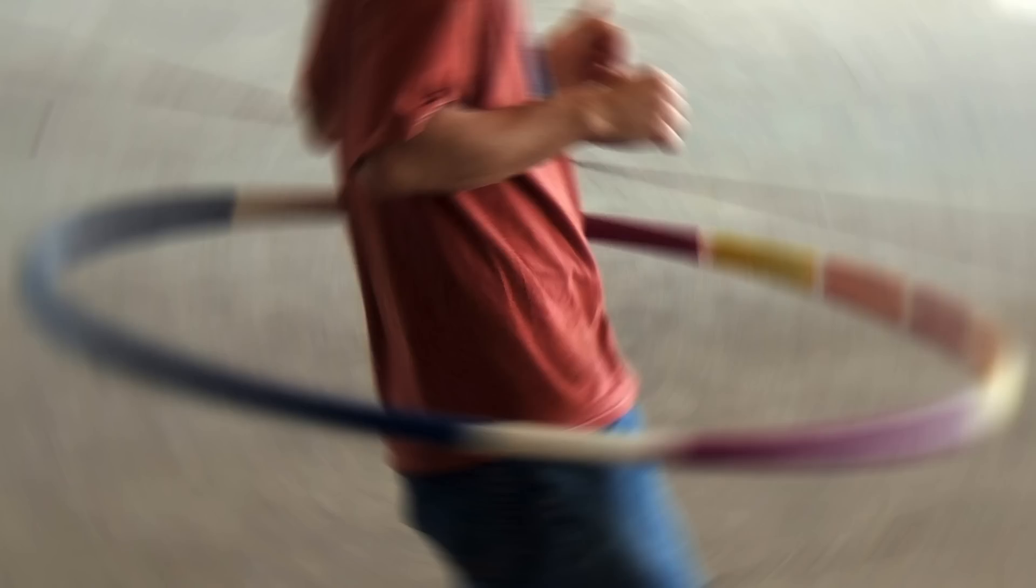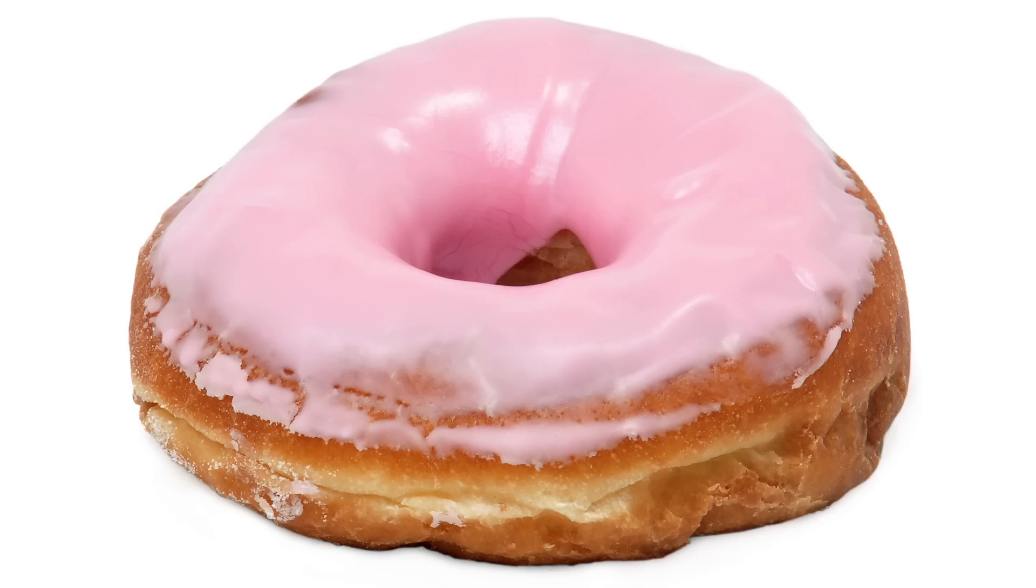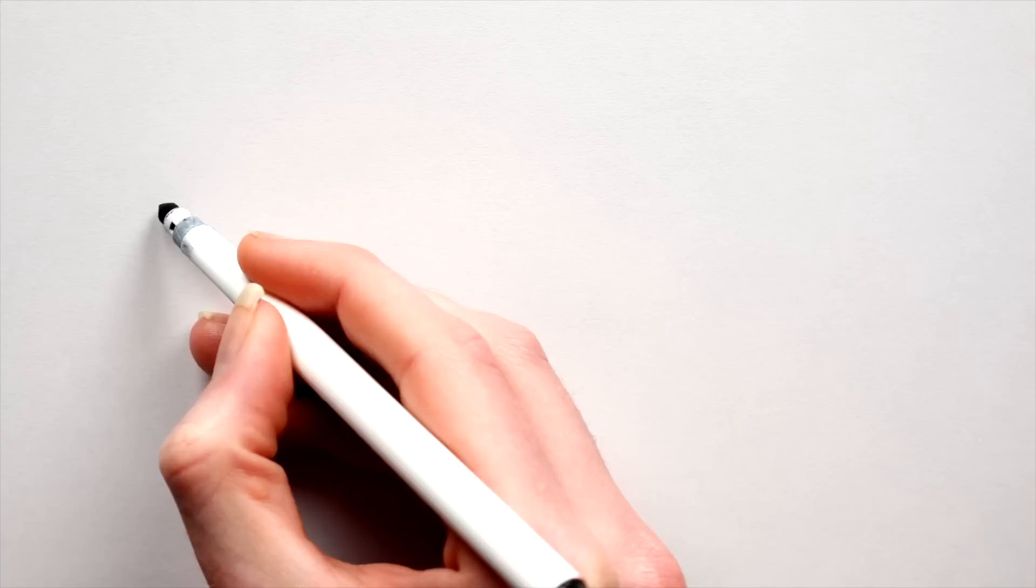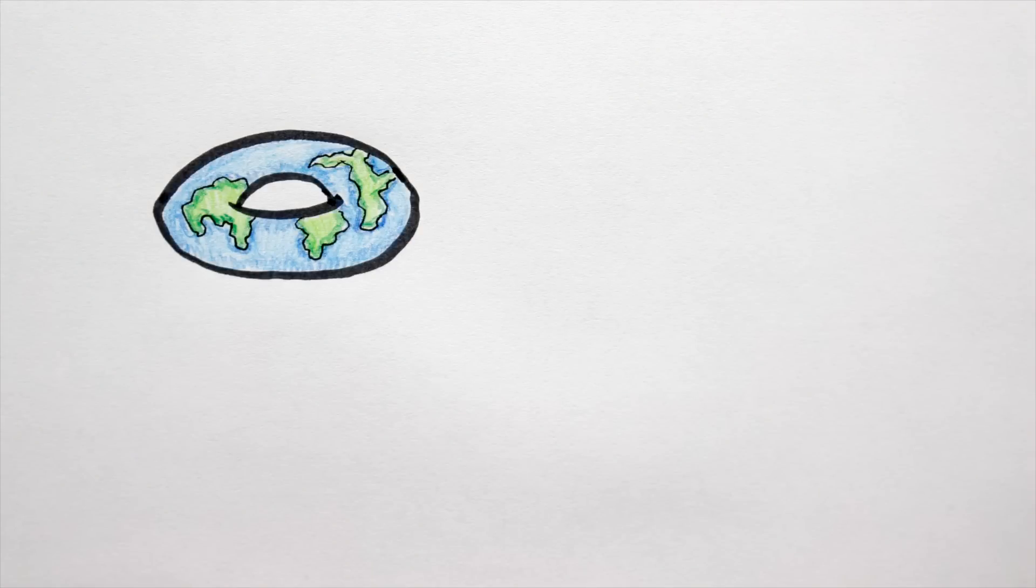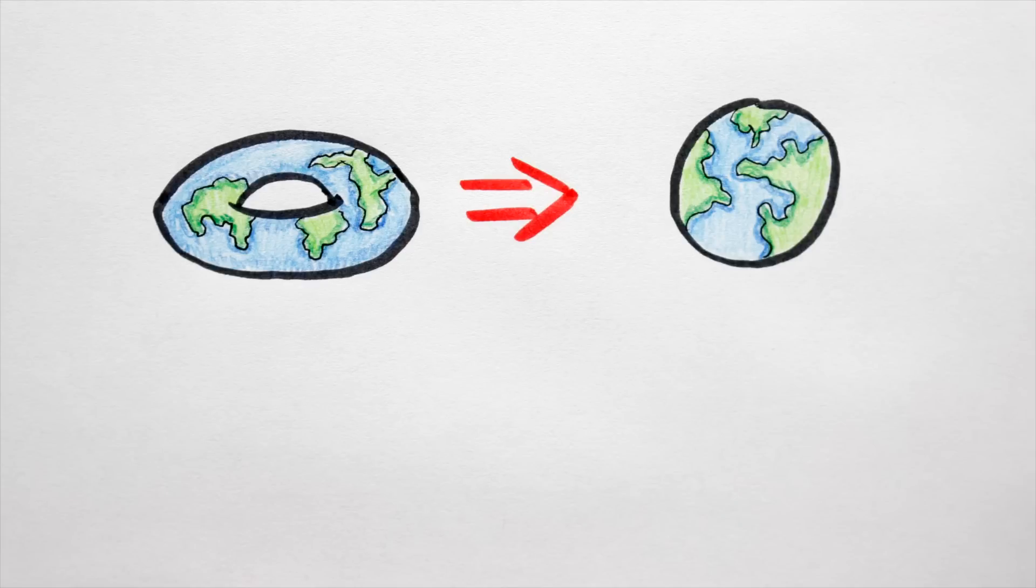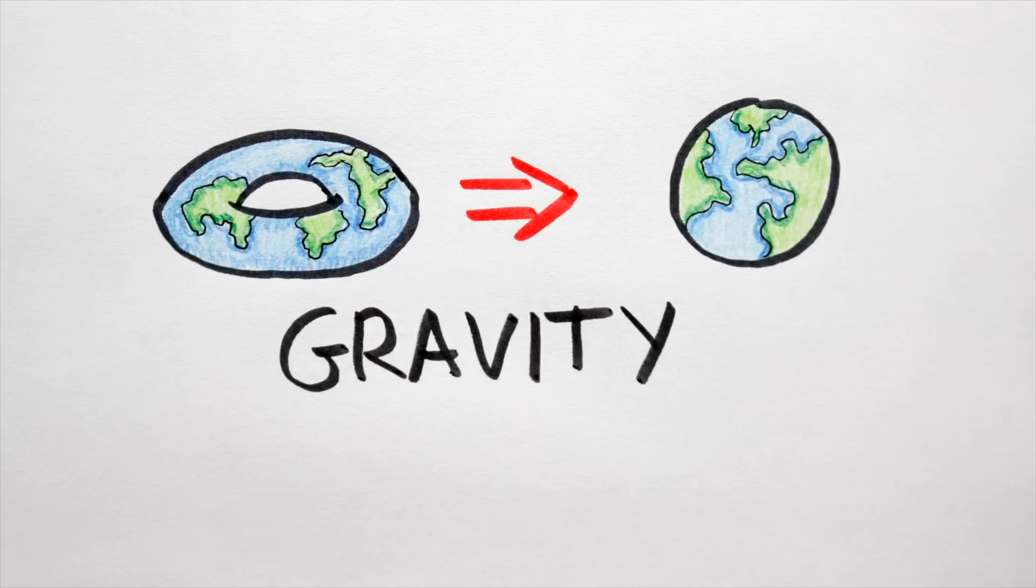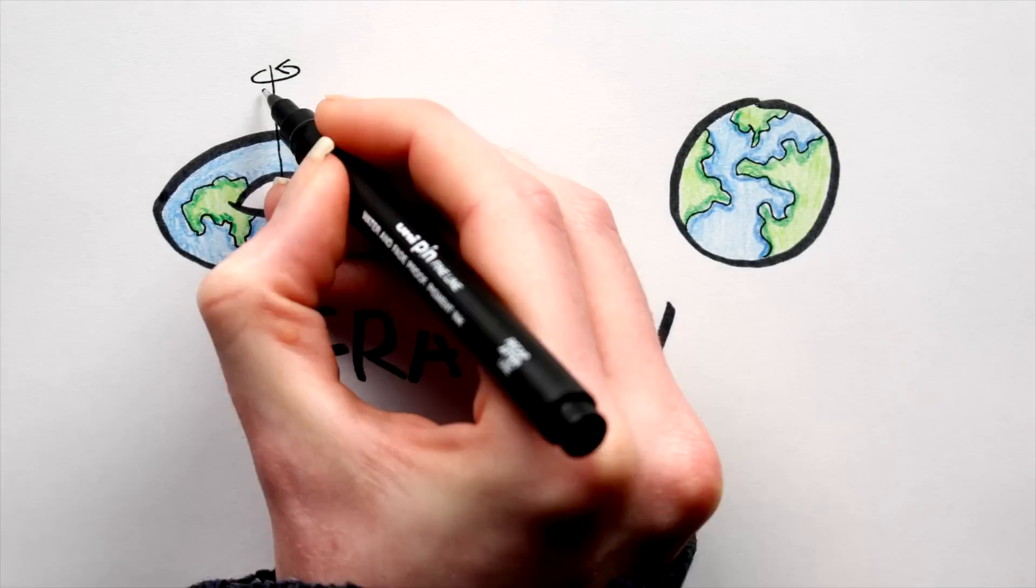In short, thin hula hoop planets are way less stable than chunky, donut-like planets. Stability would always be a concern for donut worlds. They would naturally want to degenerate into a sphere. Why? Because gravity. So to counteract the force due to gravity, a torus world would need to spin fast.